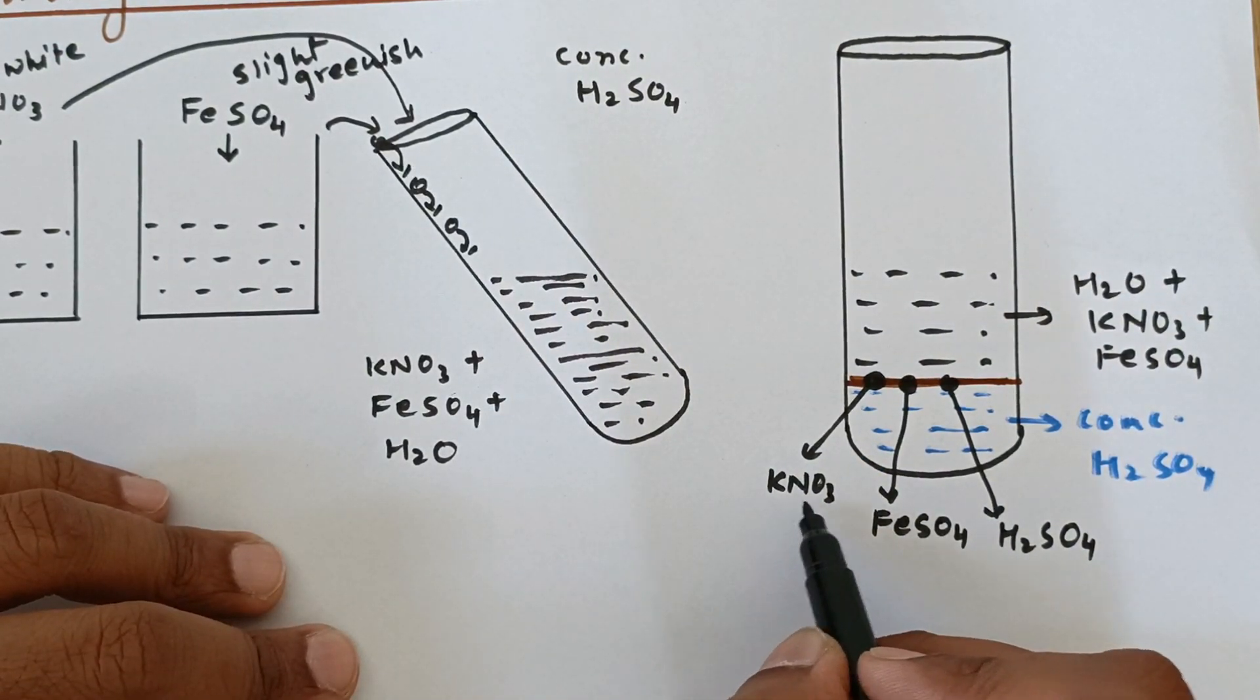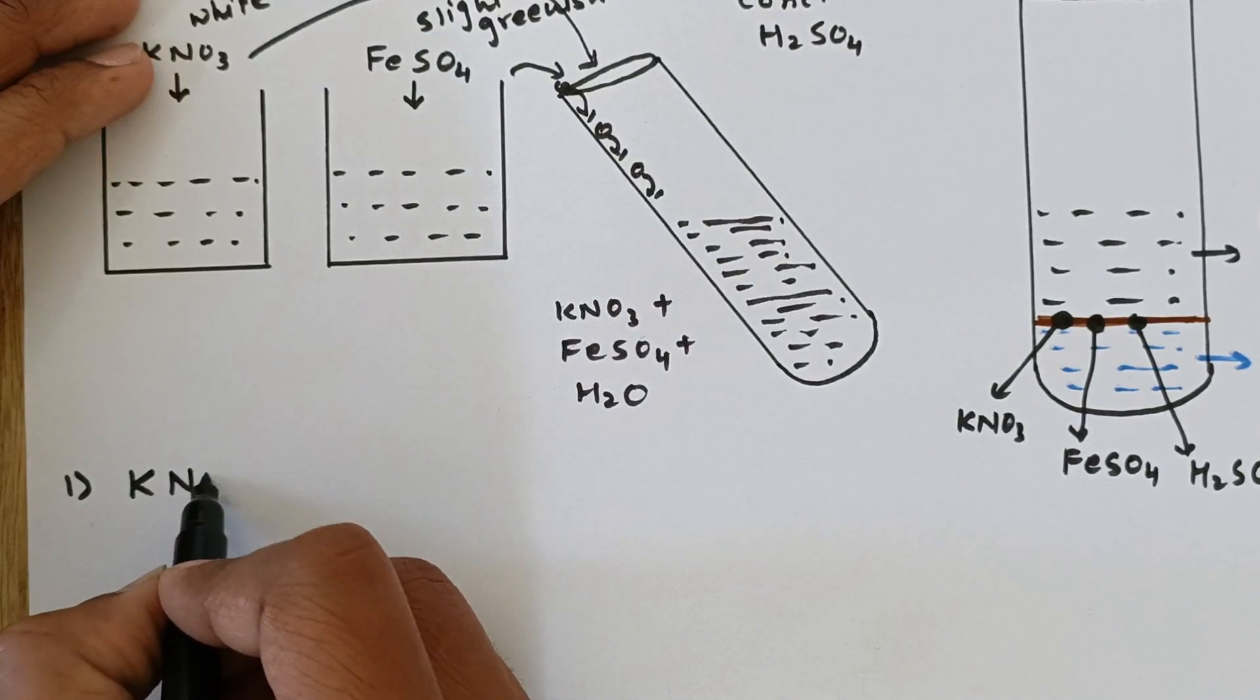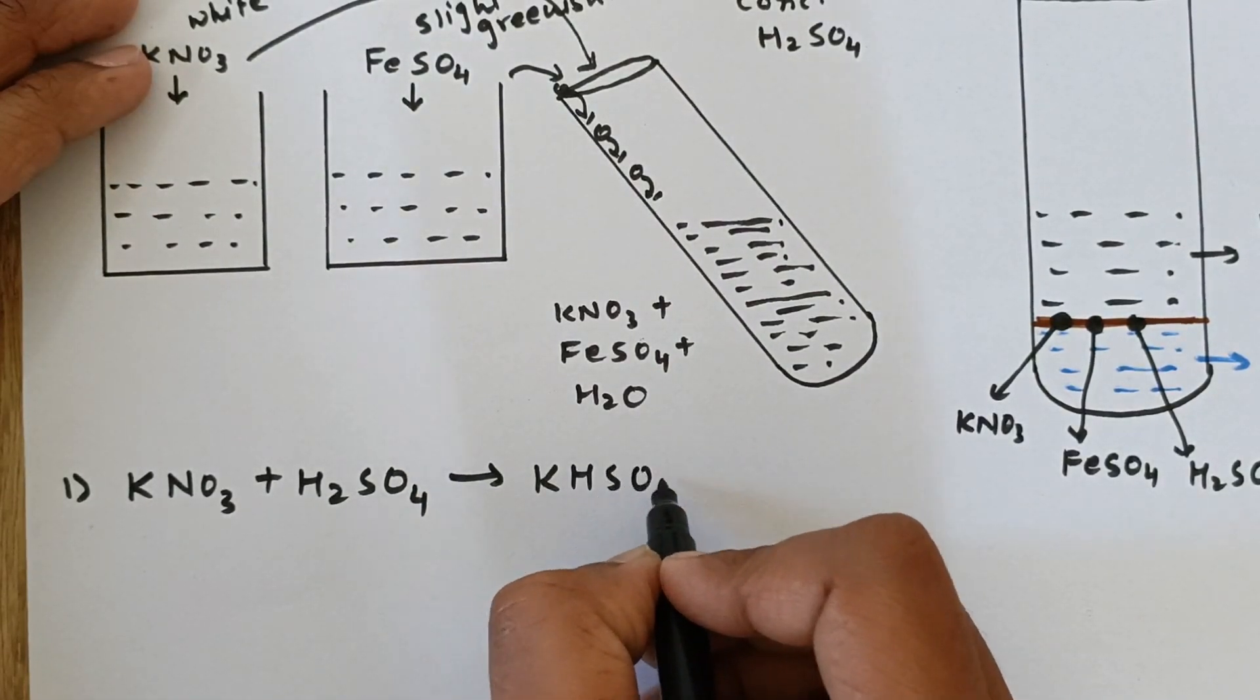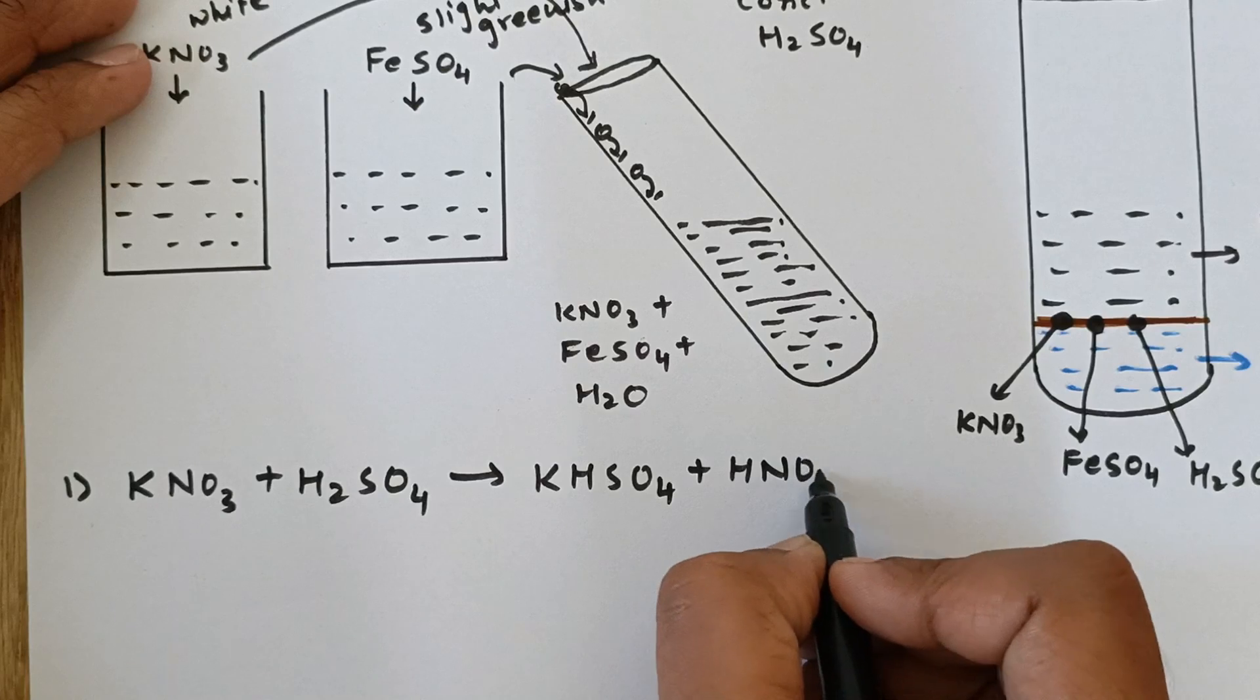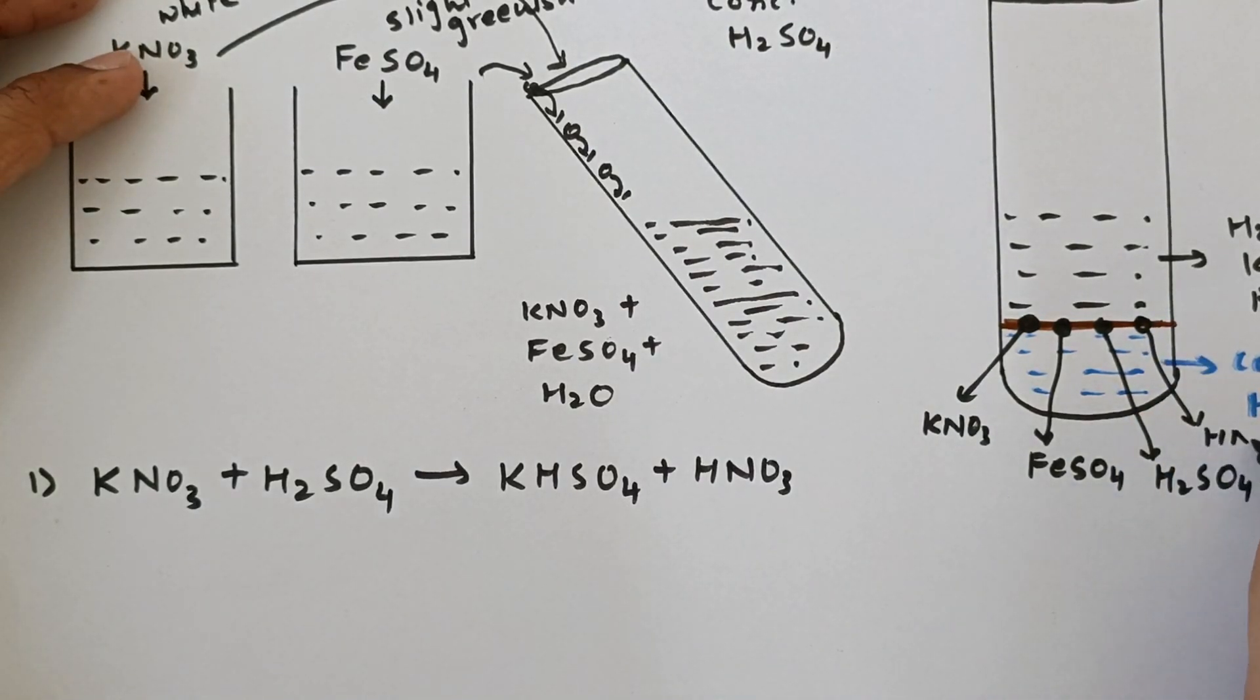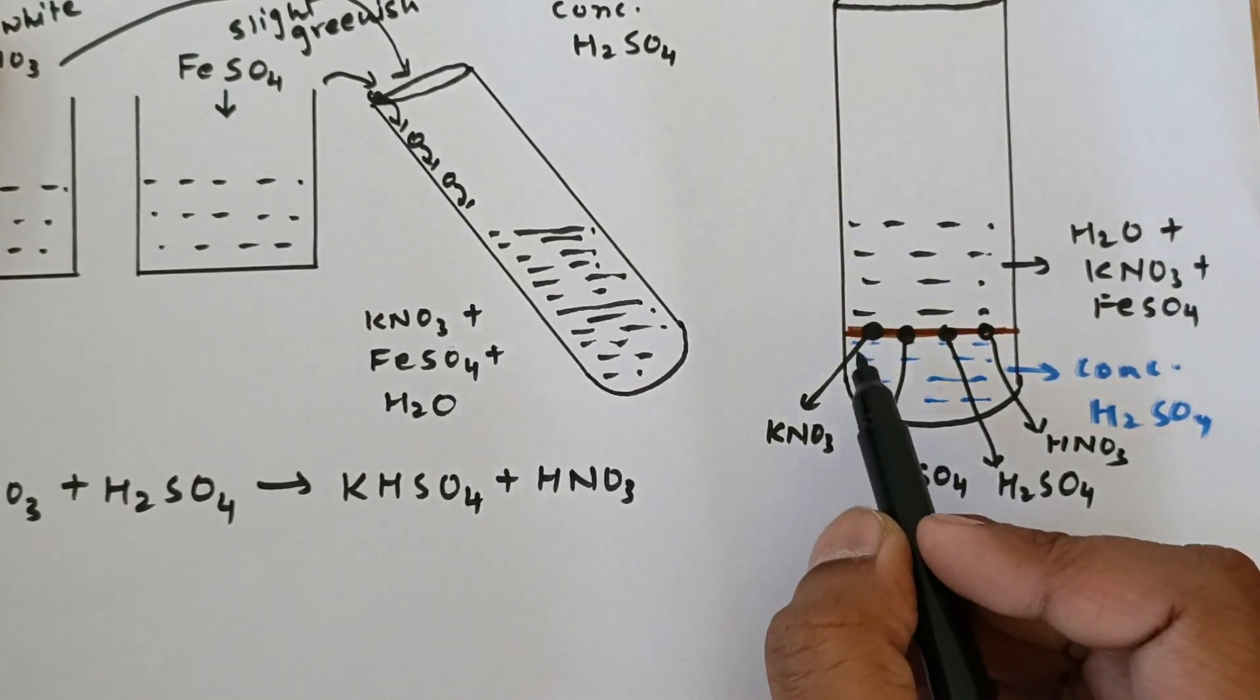Now the first reaction takes place between KNO3 and H2SO4. So that is what I am going to write over here. So this is KNO3 plus H2SO4. Now what is formed is KHSO4, that is potassium bisulfate, plus HNO3, nitric acid. Now these two products are also formed at the interface. So I am going to draw one more molecule of HNO3. Now this HNO3 takes part in the reaction with H2SO4 and FeSO4 again at the interface.